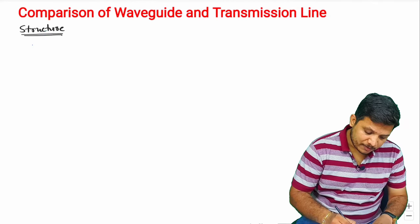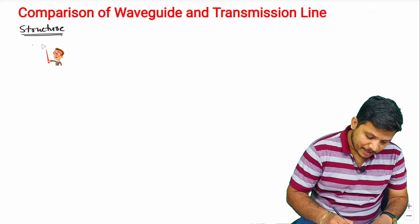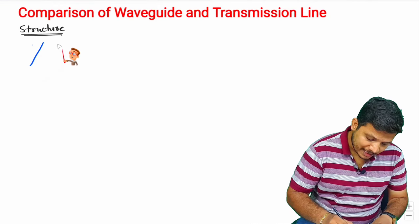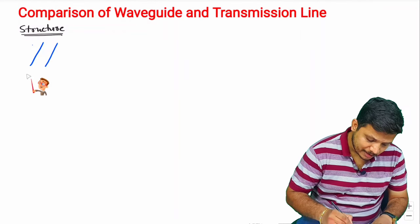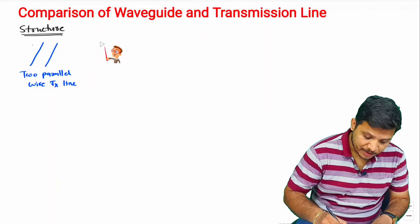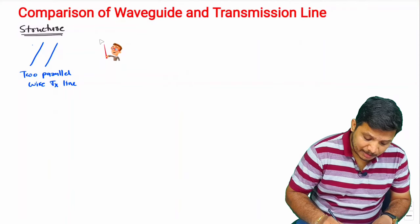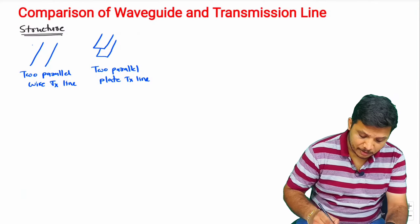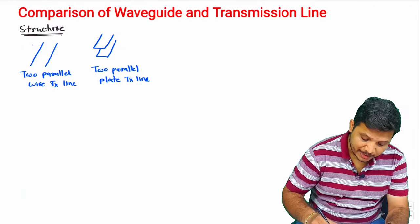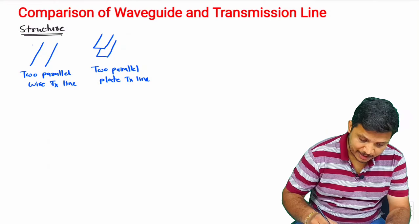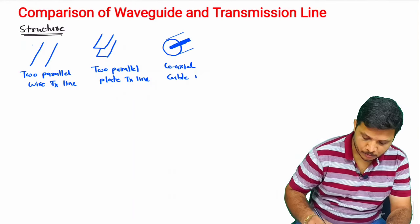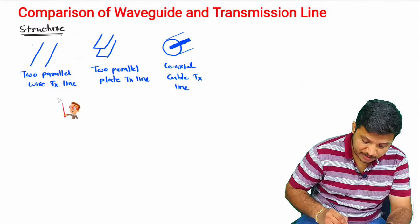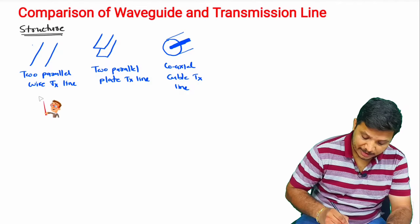When we talk about the structure of transmission line, there is the two parallel wire transmission line that we have already studied, the two parallel plate transmission line, and the coaxial cable transmission line. These are the different structures we have studied based on transmission line.